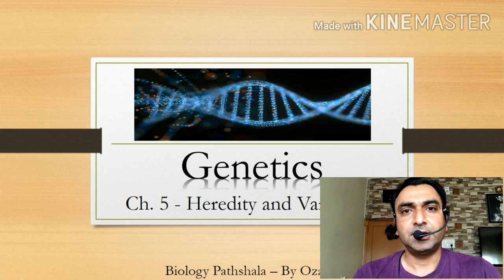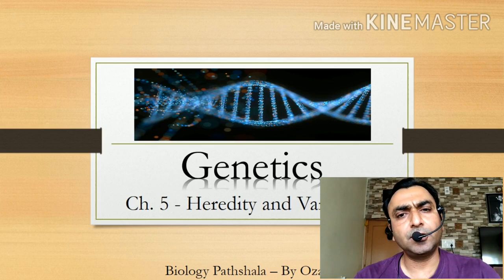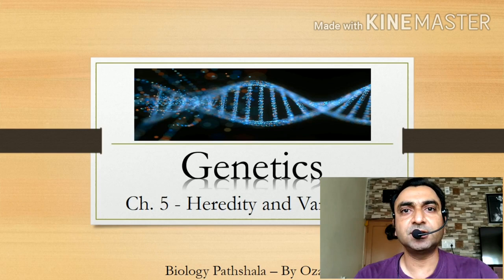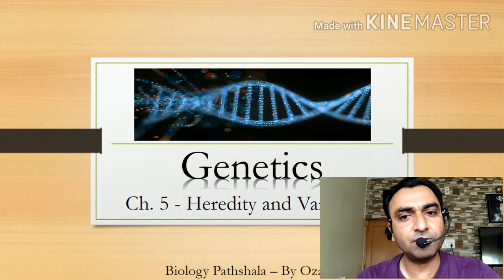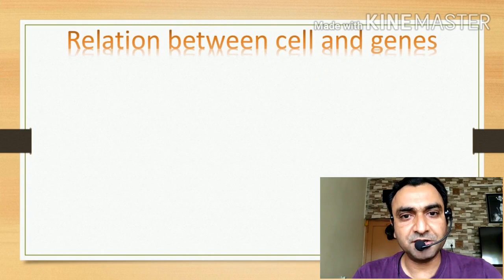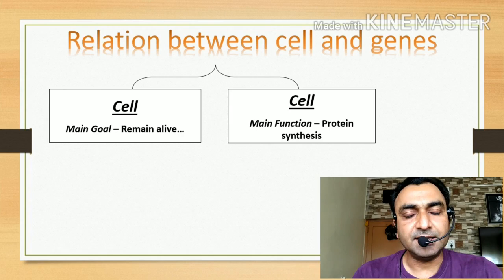Before understanding heredity and variation, let us revise a few basic characters of the cells with their correlation to the genes. We are starting with the correlation of cell functions, cell structure, and their relation with genes. Let us understand this with an example.